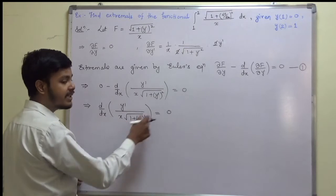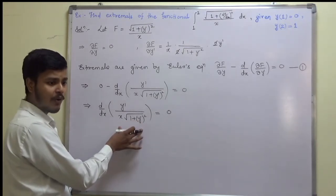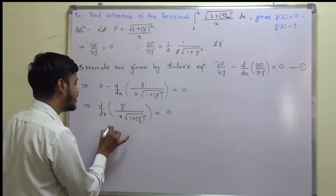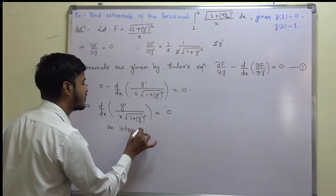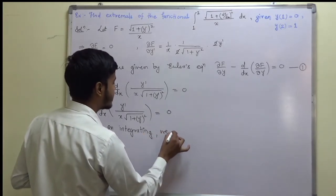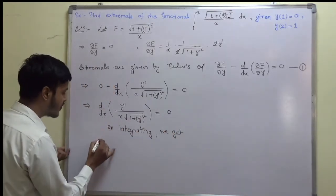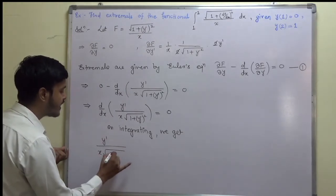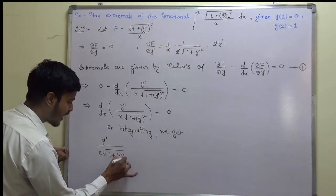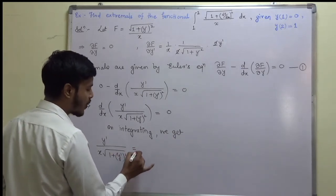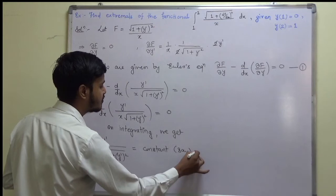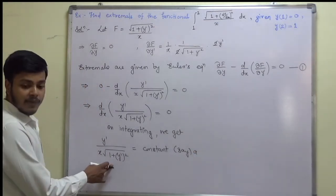Since the derivative of something equals zero, that something must be constant. Integrating with respect to x, we get y′ / (x · √(1 + y′²)) = a, where a is a constant.